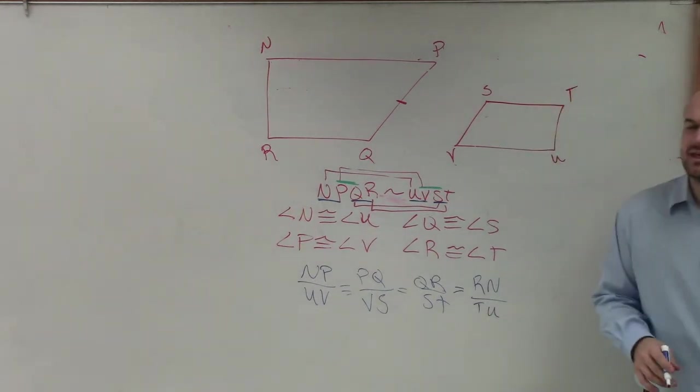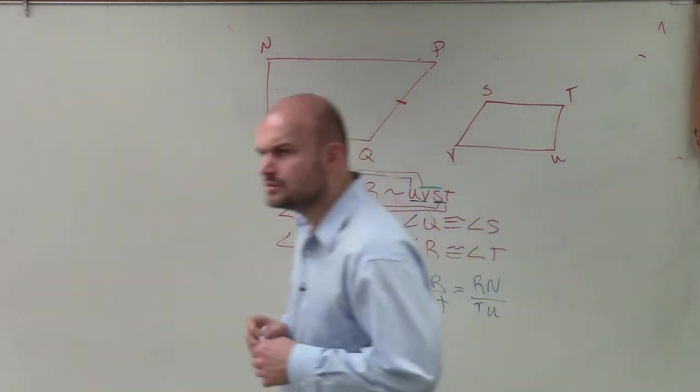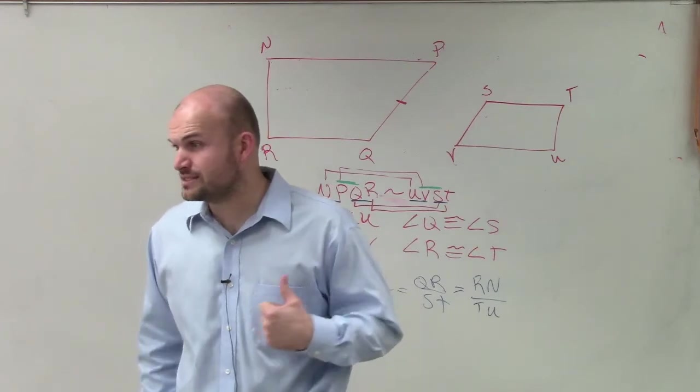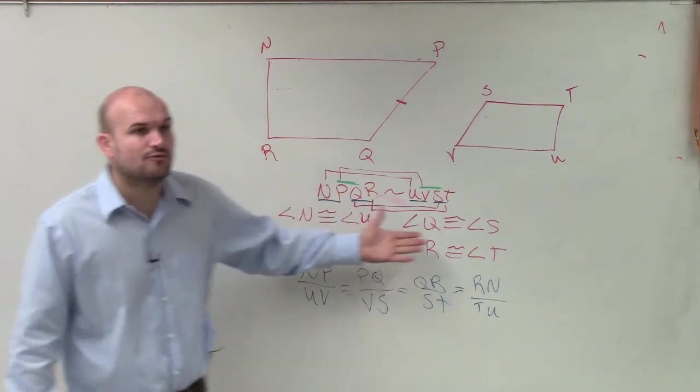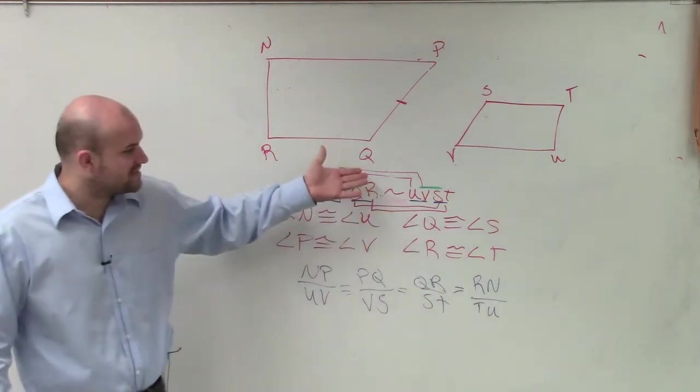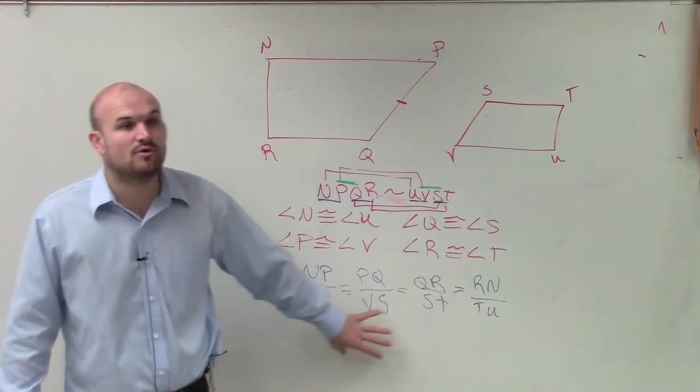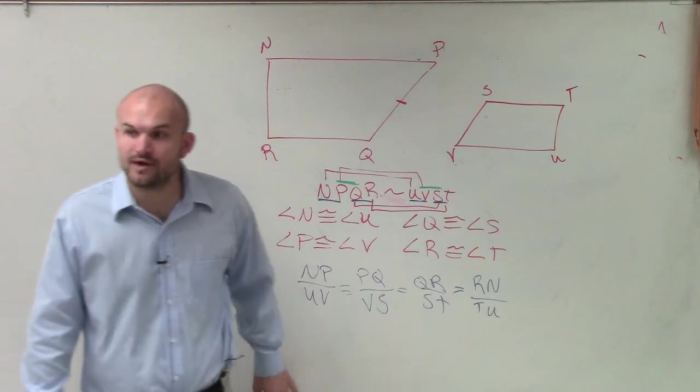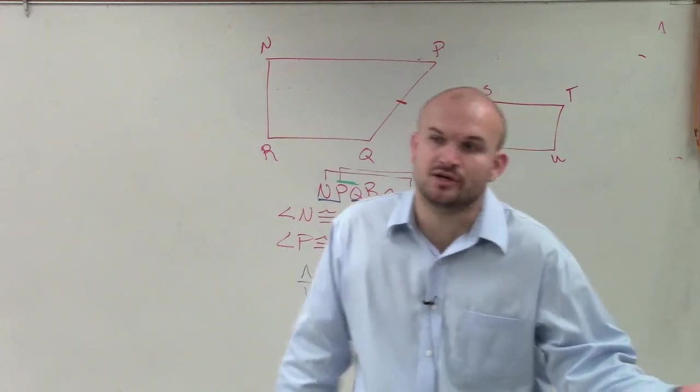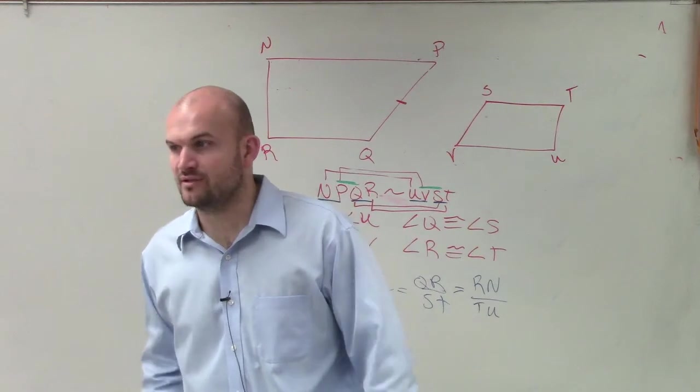So what I'd like you to be able to do is go ahead and write not only your congruency for your angles from your similarity statement, but then also write the proportions, because that's going to be very important for how we're going to be solving these. Write the proportions. How does one side from one figure relate to another side from the other figure?